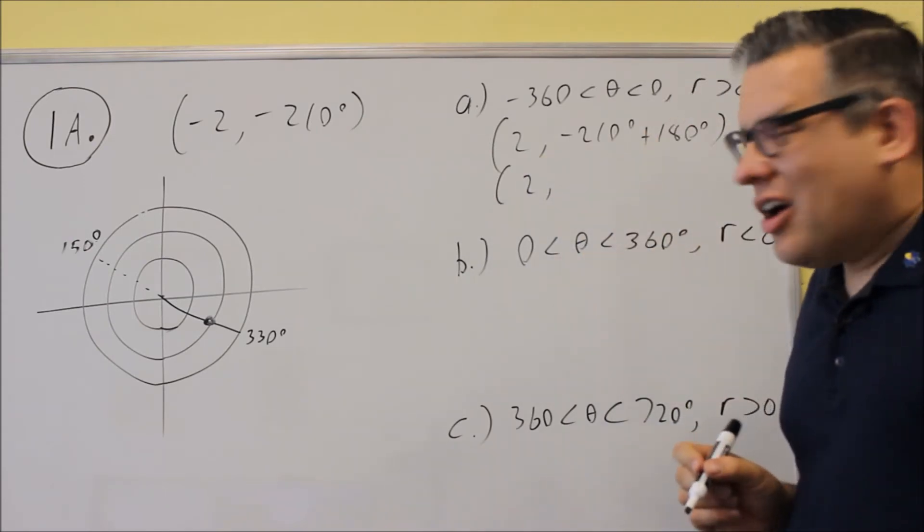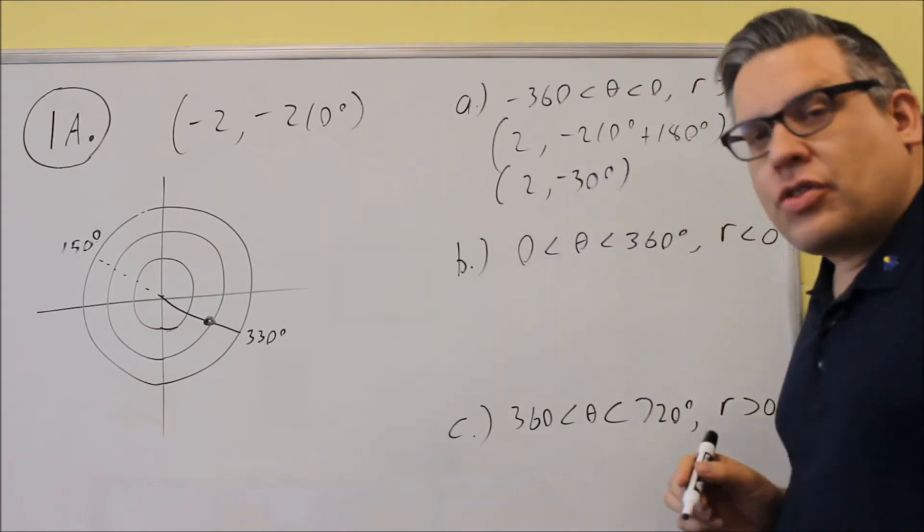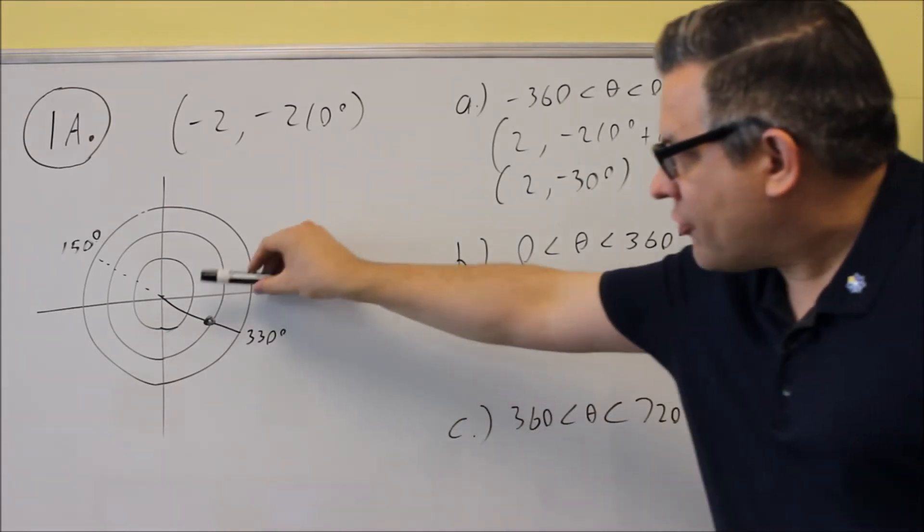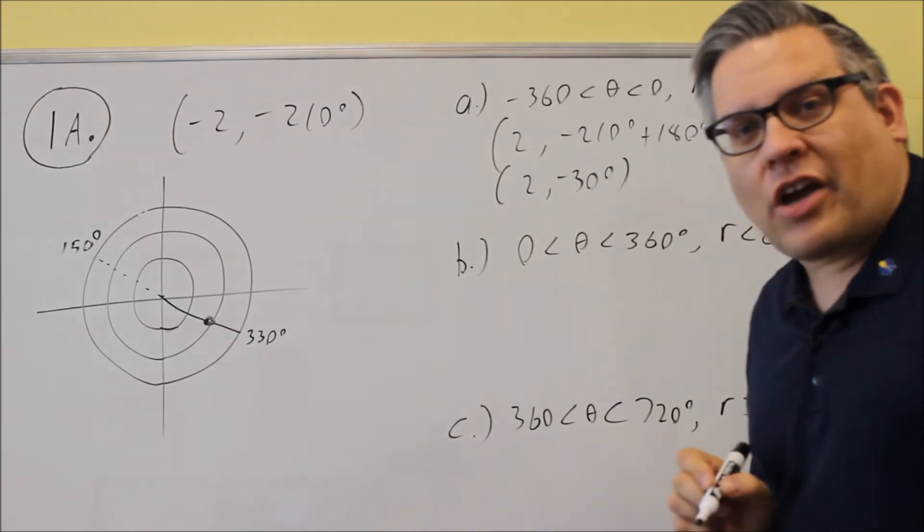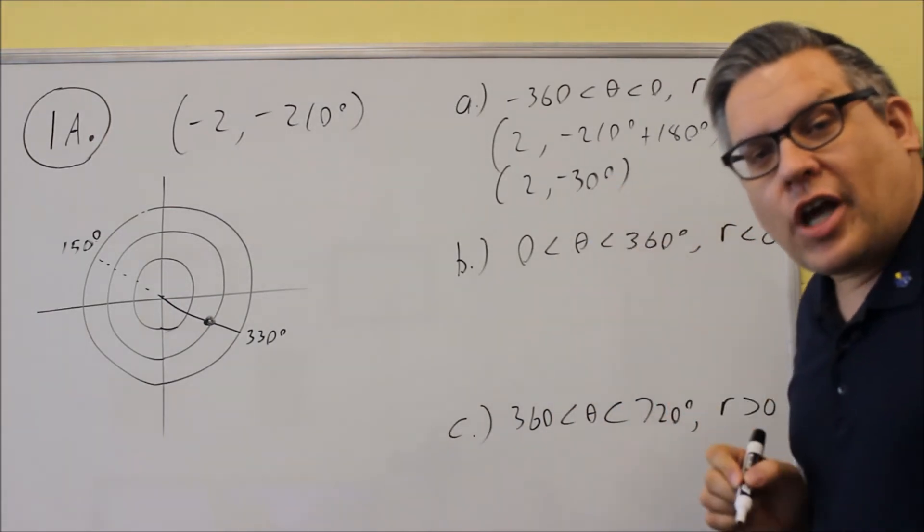And then I just need to simplify that. So negative 210 plus 180, you're going to get negative 30 degrees. Does it make sense with our drawing? Yes, it would, because from here, we're going to go negative 30 degrees and count out 2. You're going to arrive at exactly the same spot. So that's the correct answer for A, 2 comma negative 30.